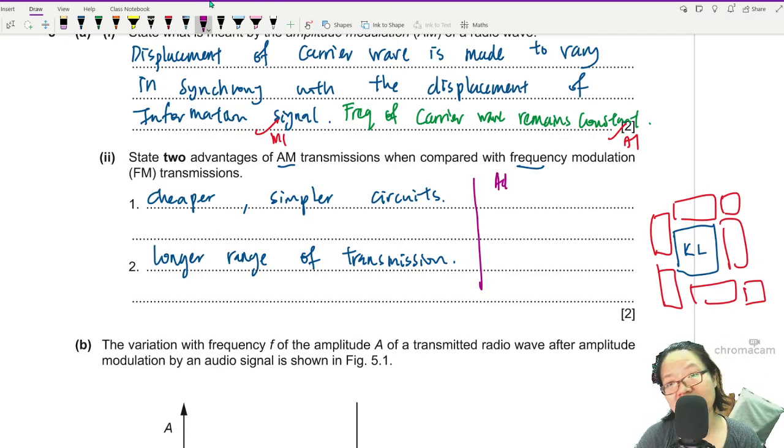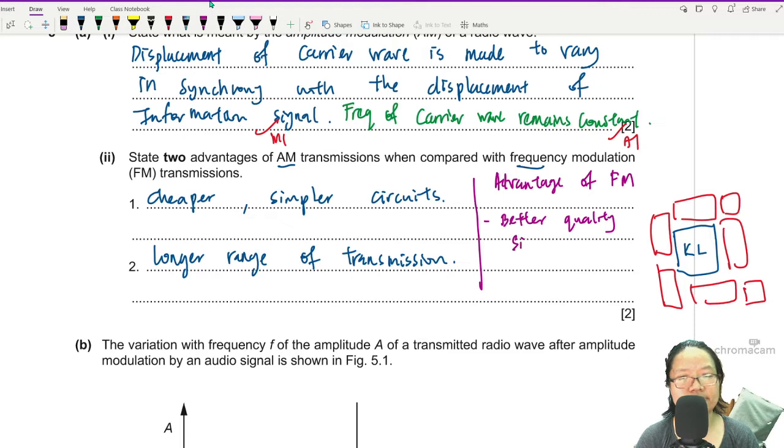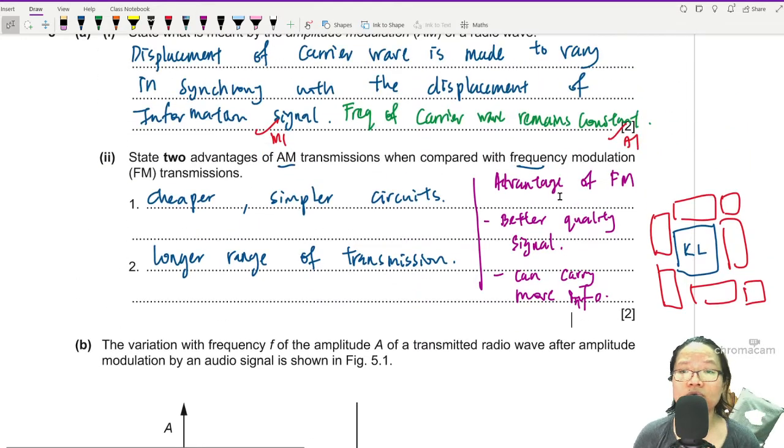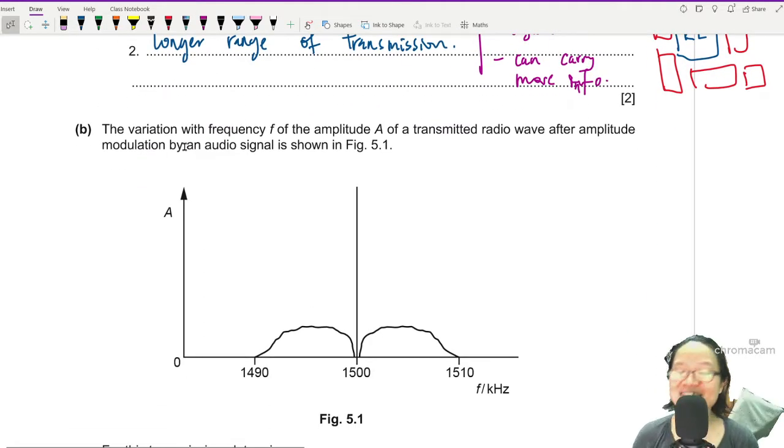Advantage of FM. What's the advantage of FM? Better quality sound. That's why your radio channel that you use to listen to music is using FM. You don't want your favorite Taylor Swift song to sound very staticky, full of static and noise. The second thing is, it can carry more information. These are all just facts at this point in time. If you want to know more, go do a degree in communication engineering or electronics engineering.